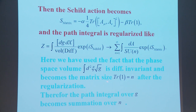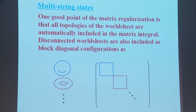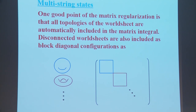We use the fact that the phase space volume is diffeomorphism invariant and becomes the matrix size N, so the path integral over G becomes a summation over N. One good point of the matrix regularization is that all topologies of the worldsheet are automatically included in the matrix integral. Also, disconnected worldsheets are included as block-diagonal configurations — if we have block-diagonal matrices, one block corresponds to a sphere, another to a torus, and so on.